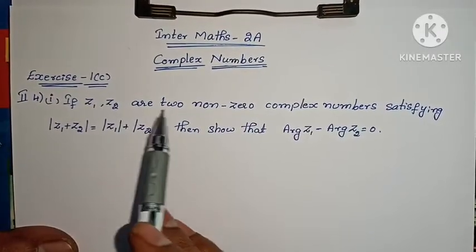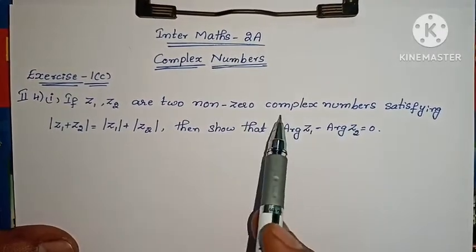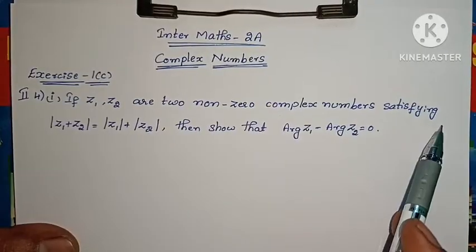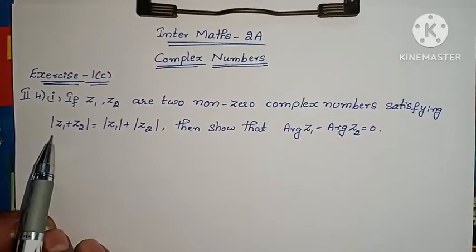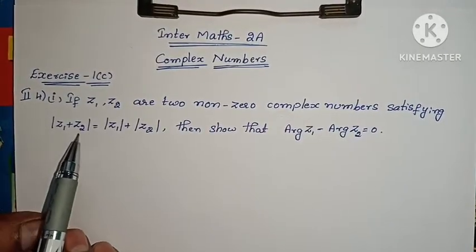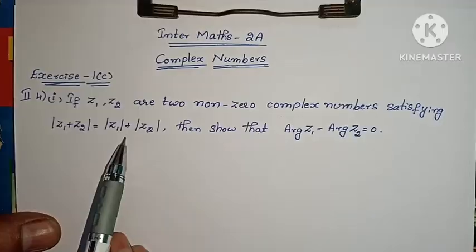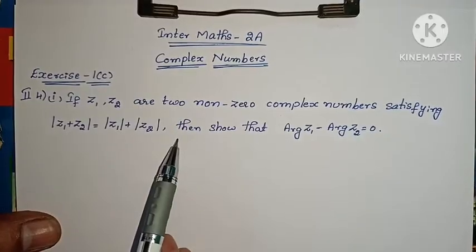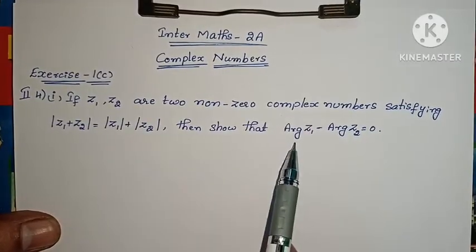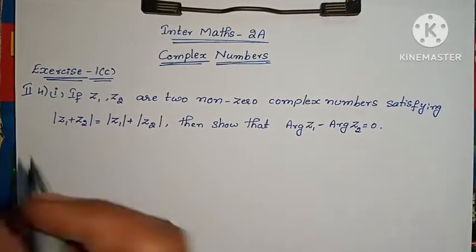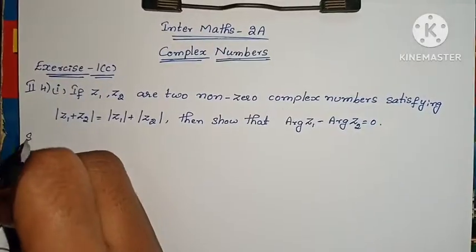The 4th problem, 1st one: if Z1 and Z2 are two non-zero complex numbers satisfying modulus of Z1 plus Z2 equals mod Z1 plus mod Z2, then show that arg Z1 minus arg Z2 equals 0.